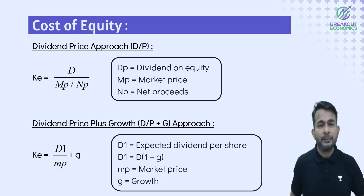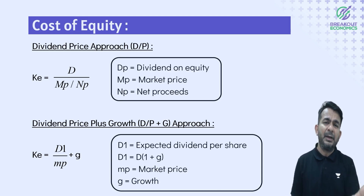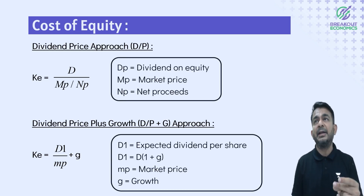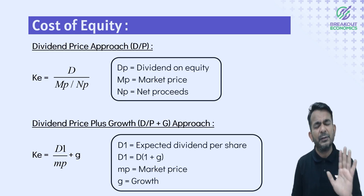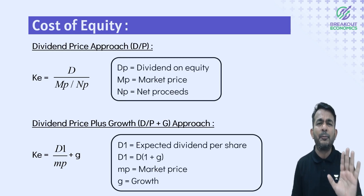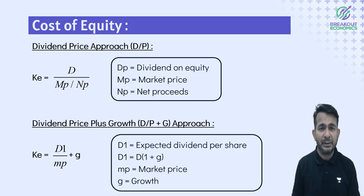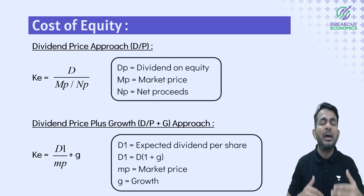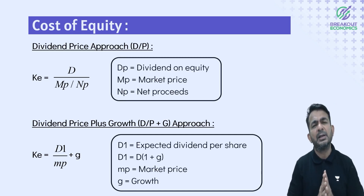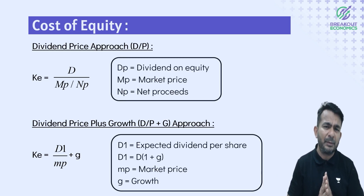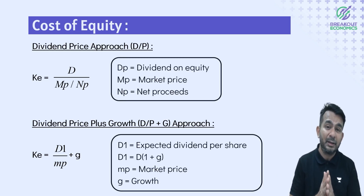If using the dividend approach, it is very simple. For preference the return is DP; for equity the dividend is DE. So KE = D / NP. NP can also be replaced by market price (MP). If the company pays a constant dividend every year, then KE = D / NP.